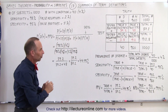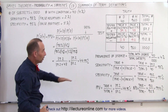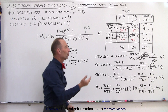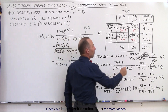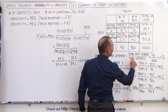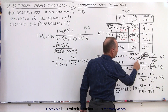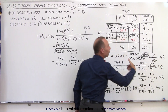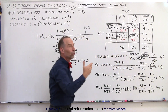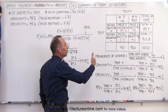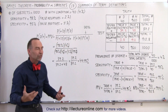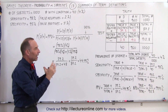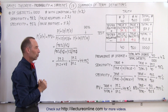Now, the definition of terms. First, here's a new term: the prevalence of disease. It is the ratio of the total number with the disease divided by the total number of subjects tested — 40 have the disease, 1,000 tested, giving a 4% ratio. That is the prevalence of the disease: how many people in the sample actually have the condition being tested for.